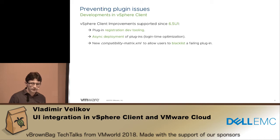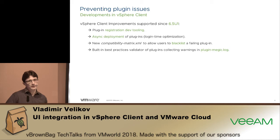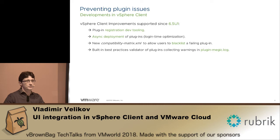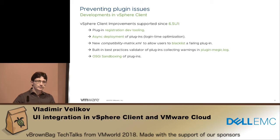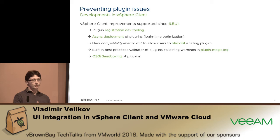We also added the compatibility matrix, where if you see a plugin is failing you can blacklist it. We also added the possibility to check the quality of plugins currently running — visible in the plugin medic log — which is very helpful for the plugin developer who sees at dev time that there are issues and can improve before this happens in production. But by far the best feature we implemented is OSGI sandboxing, which essentially enables each plugin to run in its own dependency scope, meaning one plugin cannot consume libraries delivered by another plugin, which was the most common problem during plugin deployment.